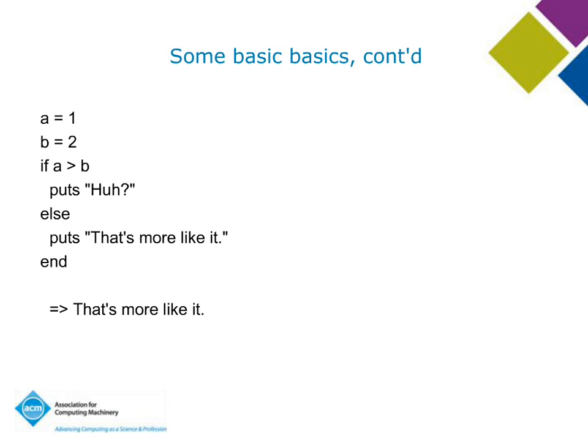Here's a little bit of control flow. `a = 1`, `b = 2`. If a is greater than b, puts 'huh', else puts 'that's more like it' — so we get 'that's more like it'. There's basic if/else. There's also `unless`, `until`, and `while` — various control flow options. Ruby has a full toolkit of that.